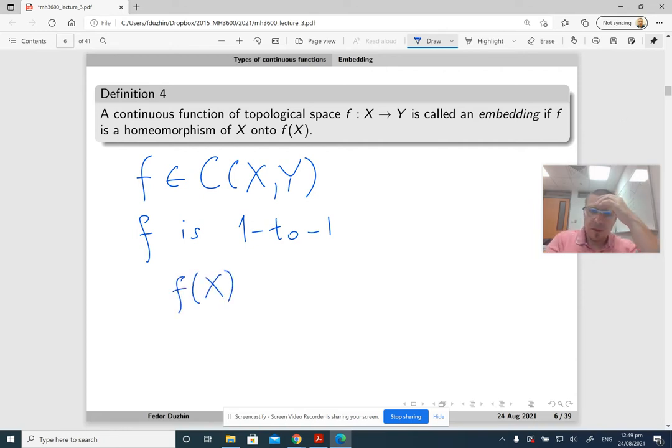If you instead of considering f as a function from X to Y take the function from X to f(X), then it is going to become a bijection and you can take its inverse which is defined from - so the domain of the inverse of f is going to be the image of the original f back to X.